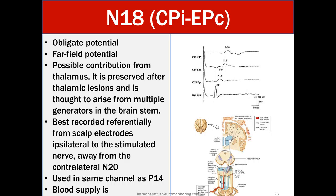N18's blood supply is the vertebral basilar artery. Looking at the pathway diagram, the N18 spans from the pontine-mesencephalic region all the way up into the thalamic area, with multiple generator areas along this brainstem pathway contributing to the response.